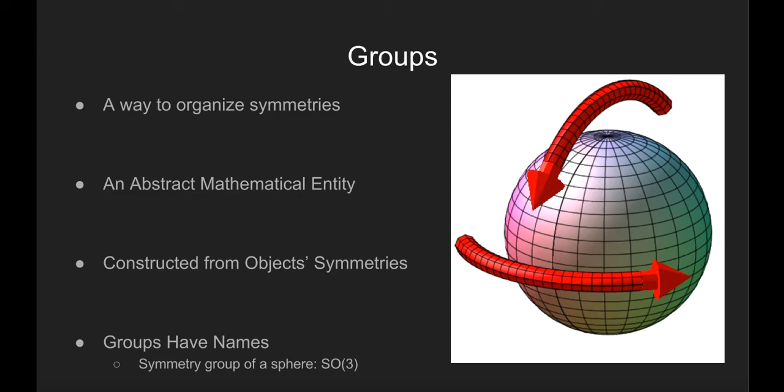Let's move on to the concept of a group. A group is the set of all symmetries of an object. For example, the symmetry group of a cube consists of 24 elements, each of its 24 symmetries. A group is an abstract mathematical entity that describes an object and is constructed from an object's symmetries, not the physical object. Certain groups are given specific names. For example, the symmetry group of a sphere is known as SO3.